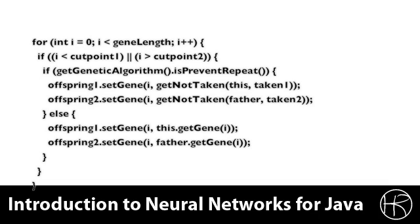Next we process the remaining genetic material. You'll notice in the loop that we check the prevent repeat. If we are not supposed to repeat then we need to call the get not taken which is basically going to make sure that we're not repeating something. If we are repeating something then a suitable substitute is found. Otherwise we drop down to the else clause and we process this gene exactly as we processed it in the previous for loop.